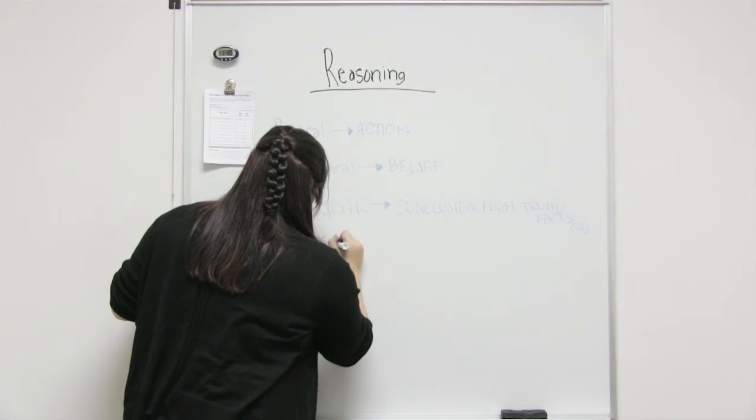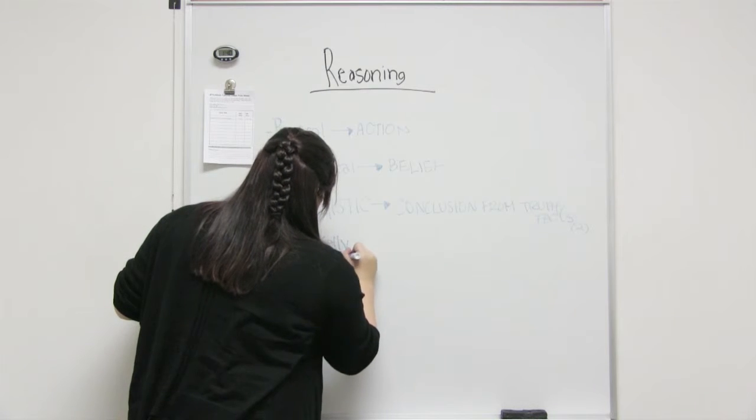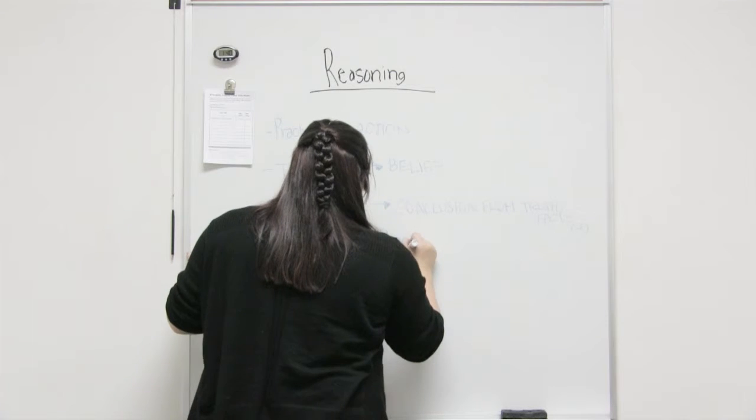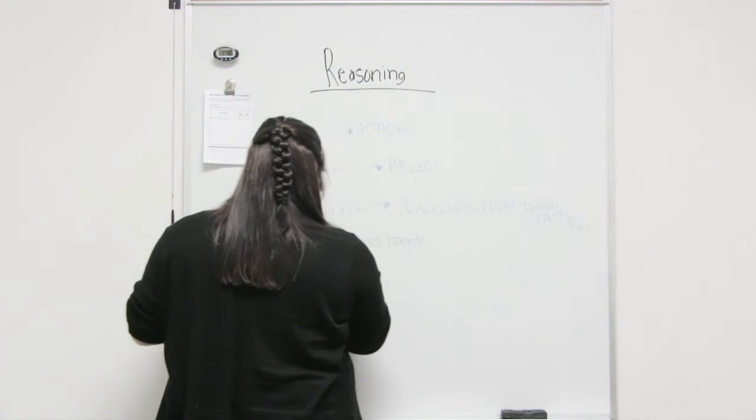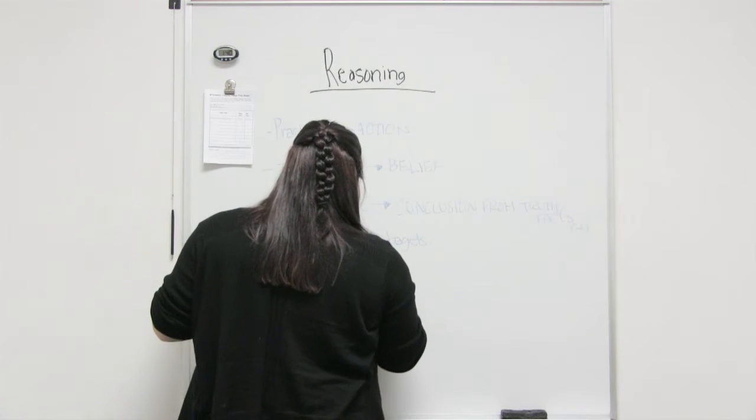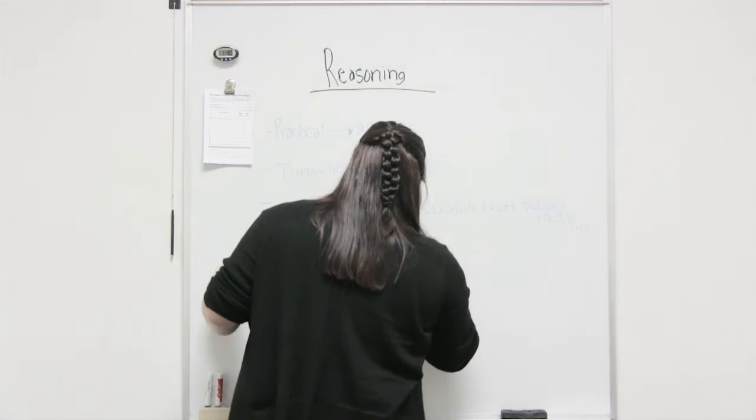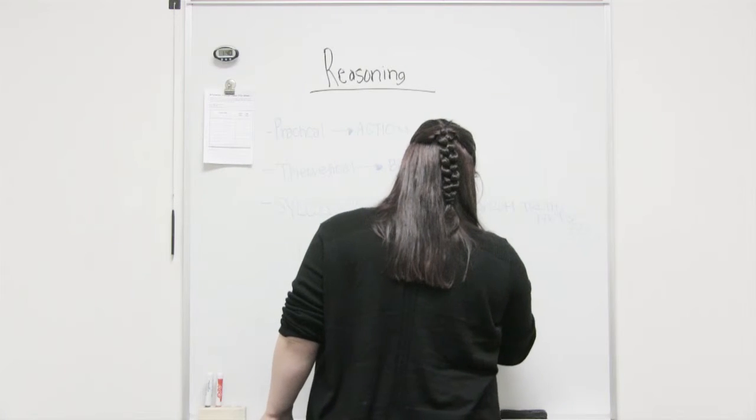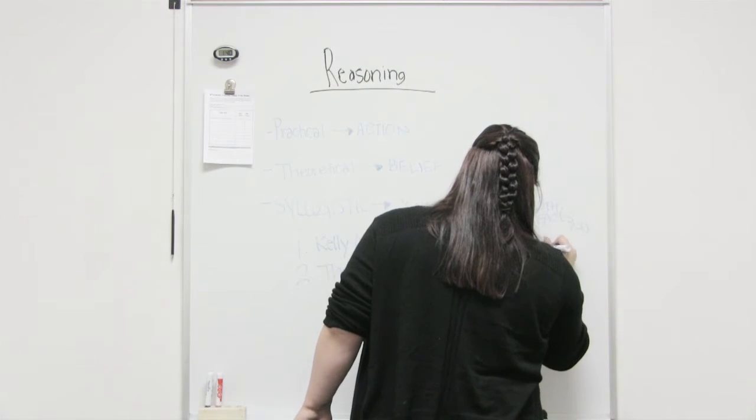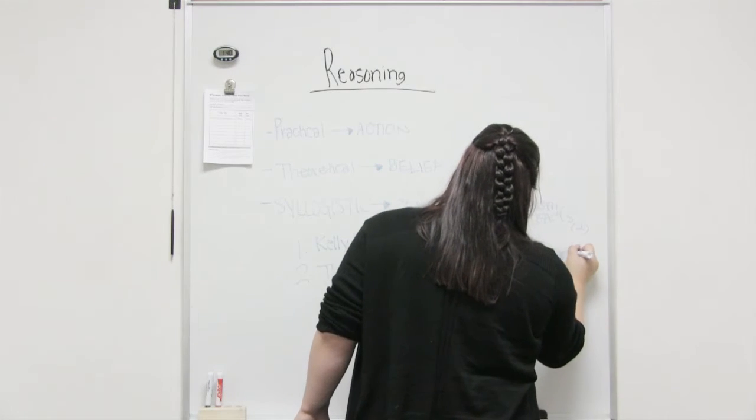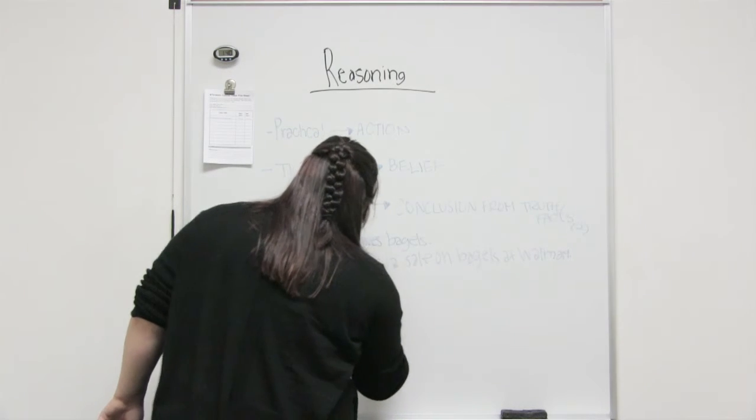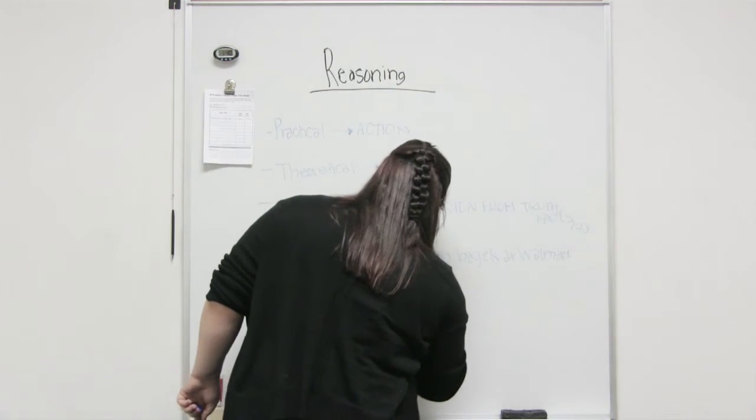If I say Kelly loves bagels, and that's my first statement. And my second statement is there is a sale on bagels at Walmart, the conclusion that I can make from these two statements using syllogistic reasoning is that Kelly will be at the bagels table.